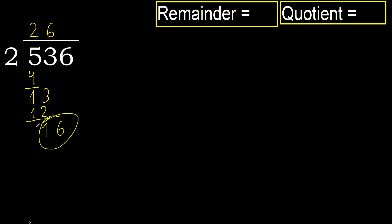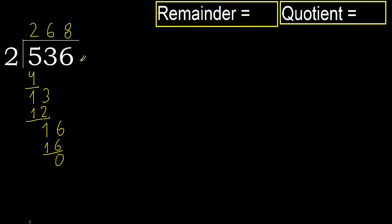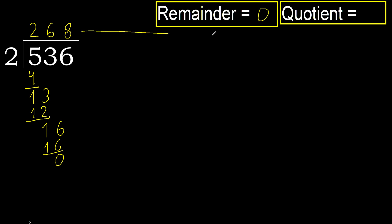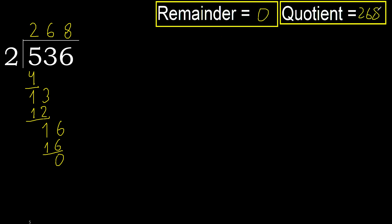16. 2 multiply by 8 is 16. Subtract. Next — that is not a number, therefore finish it. Ok.